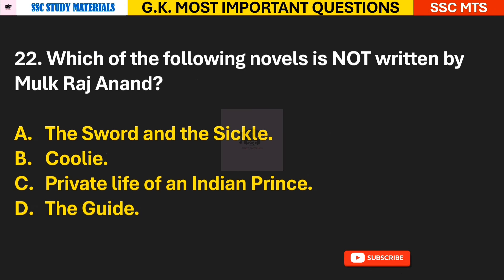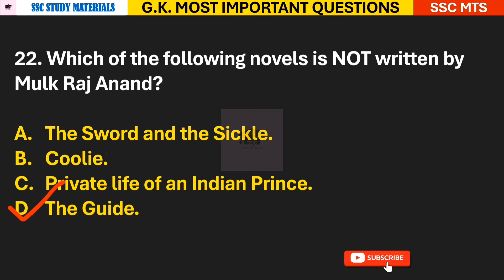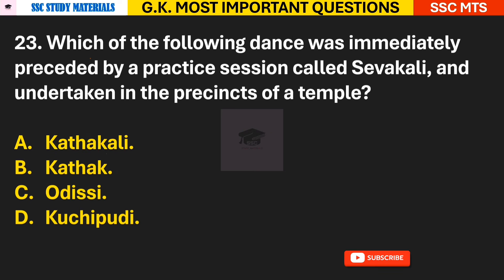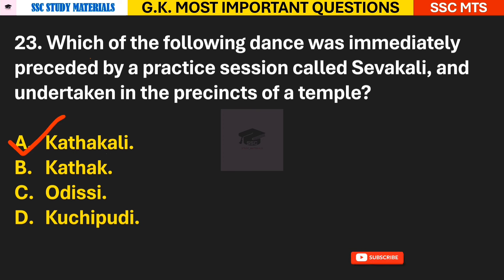Question 22: Which of the following novels is not written by Mulk Raj Anand? Answer D — 'The Guide', which is written by R.K. Narayan. Question 23: Which of the following dances was immediately preceded by a practice session called 'sevakali', undertaken in the presence of a temple? Answer A — Kathakali.